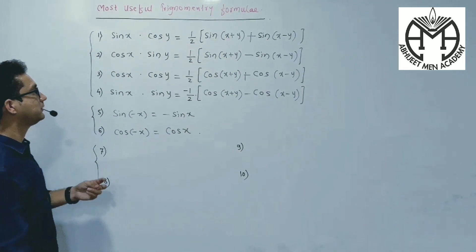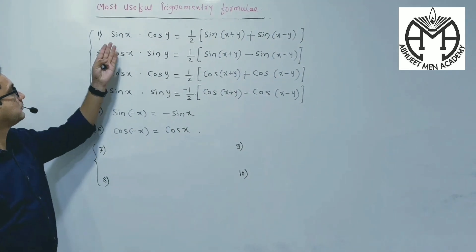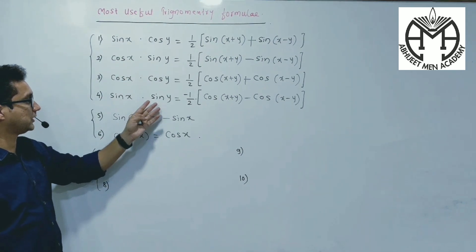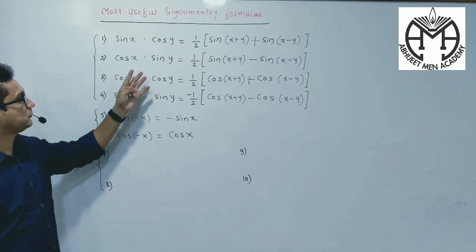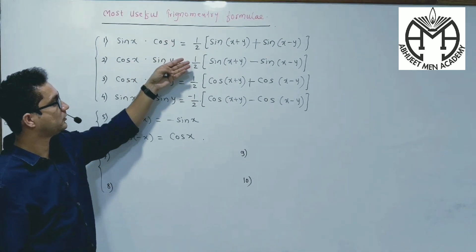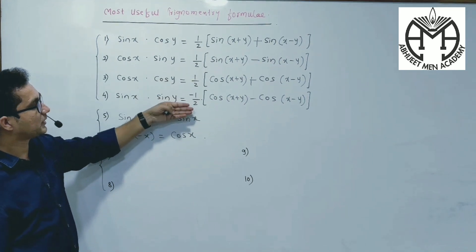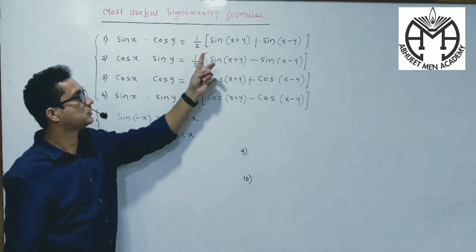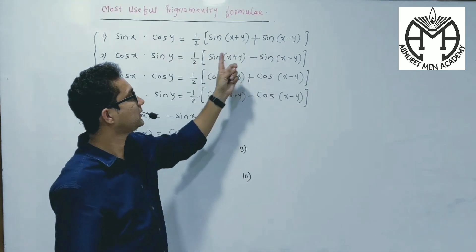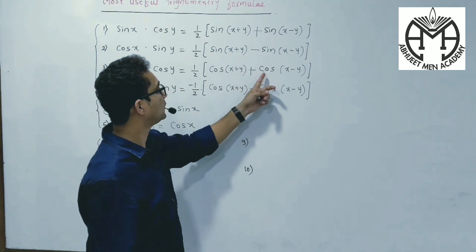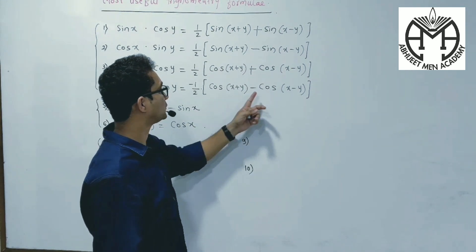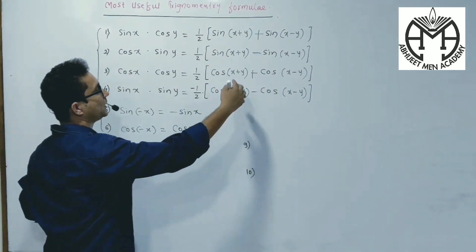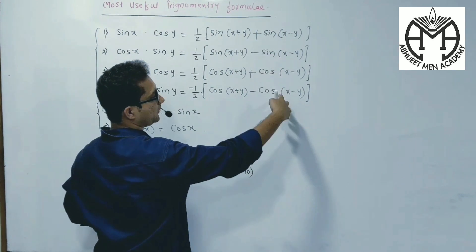So a very simple way. For example, Sin-Cos, Cos-Cos, Cos-Cos, and Sin-Cos. In all the different formulas, one-half, one-half, one-half, and last minus one-half. But here it will be Sin-Sin, Sin-Sin, Sin-Sin. You see it will be Cos-Cos, Cos-Cos.